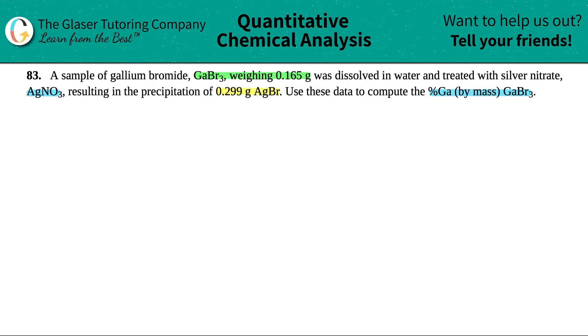Let's get down to it. It looks like they're trying to describe a reaction here. They're telling you that we're starting off with gallium bromide, GaBr3. It was dissolved in water and then treated or reacted with silver nitrate, and they told us one of the products. The first thing is I have to make an equation.